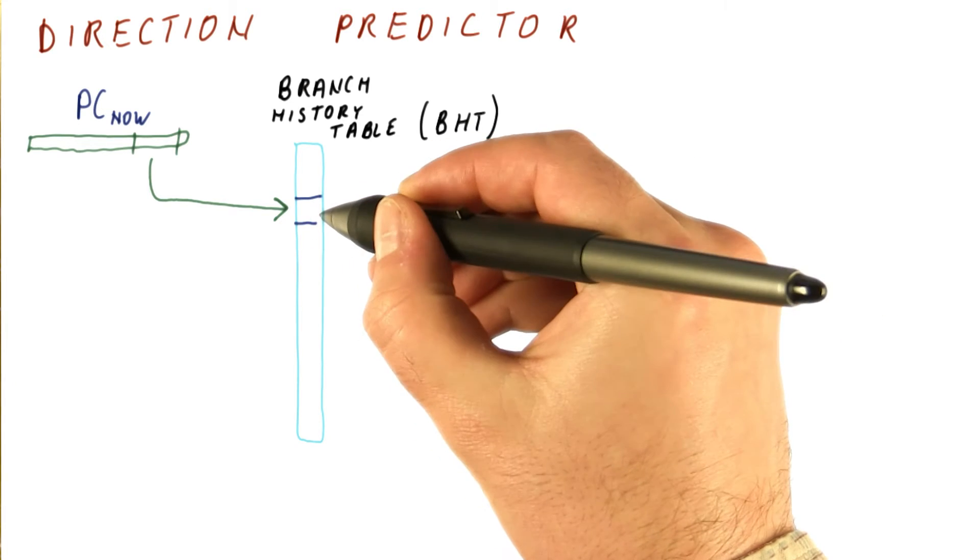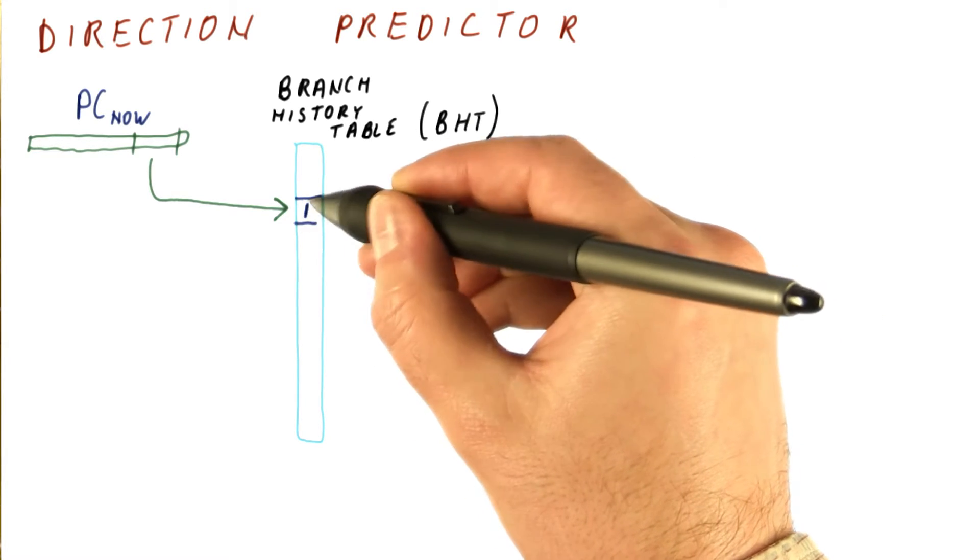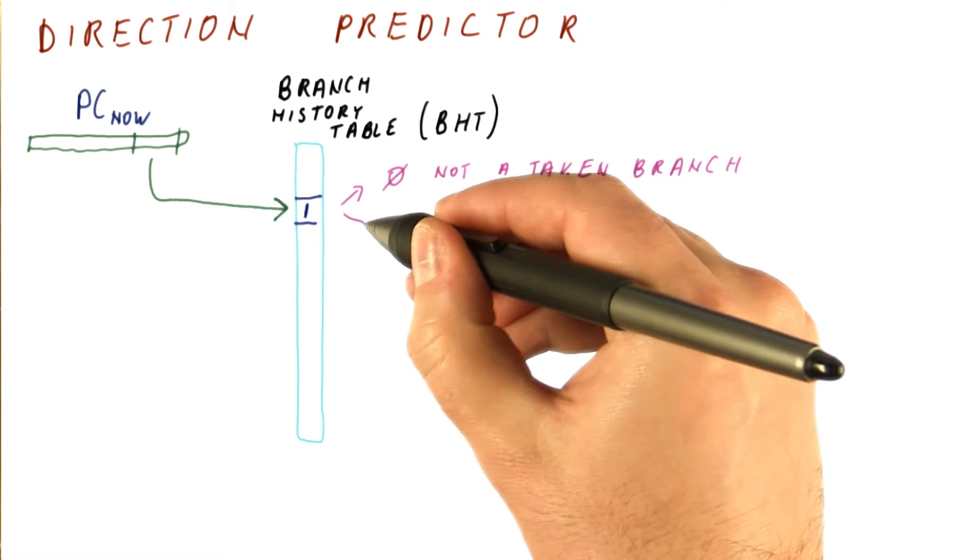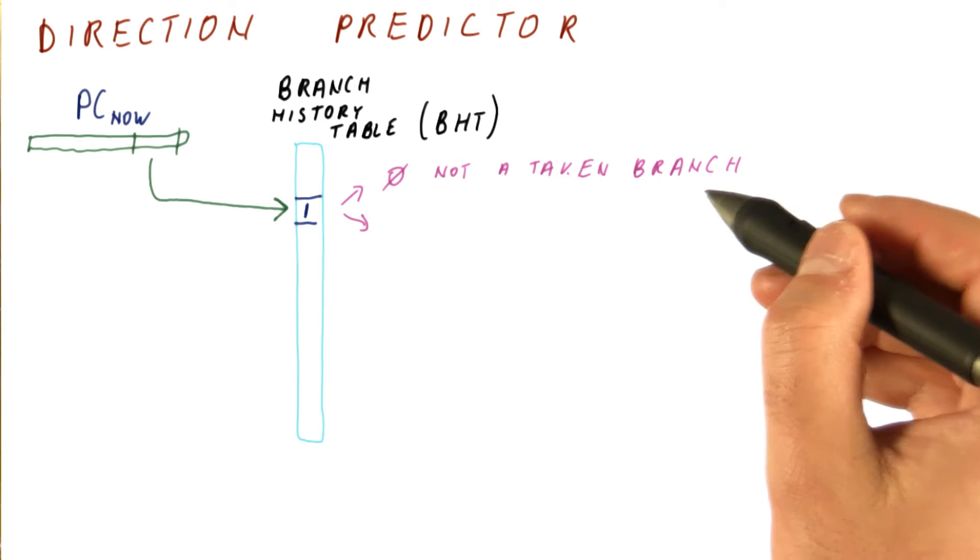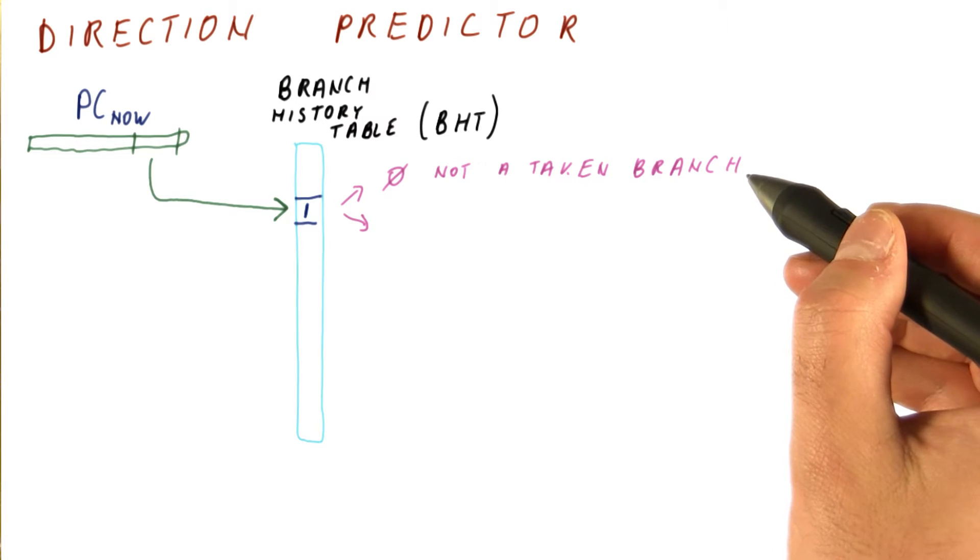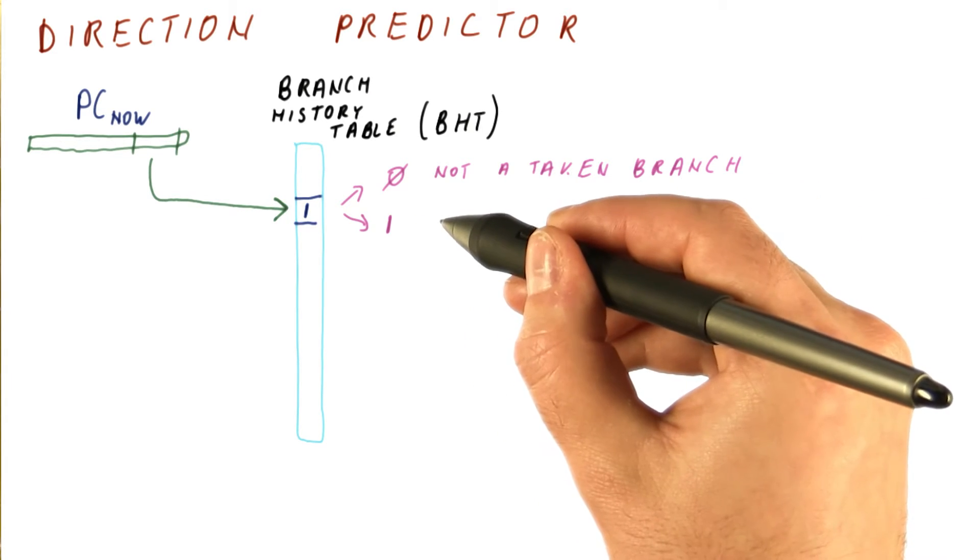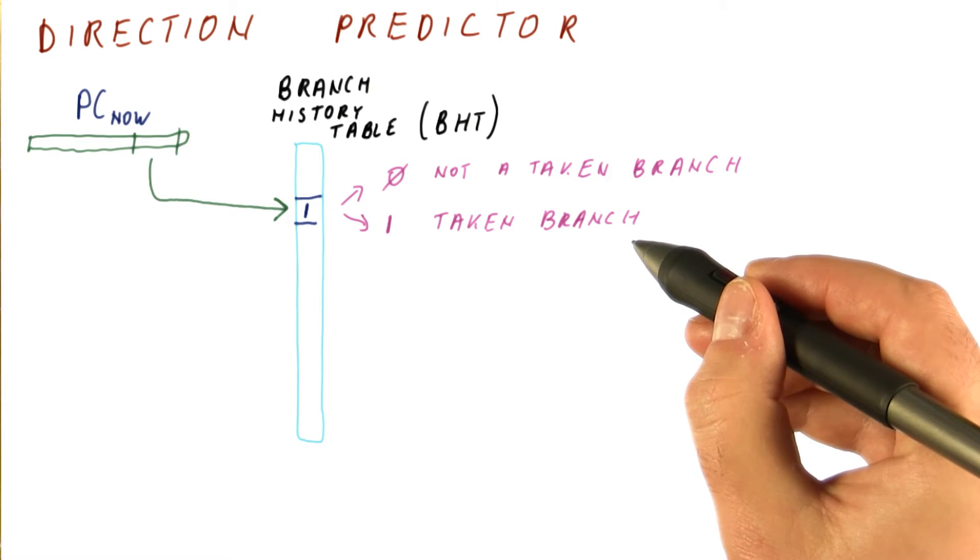The simplest predictor will simply have a one bit here that tells us if this is not a taken branch, meaning it's a non-branch or a not taken branch. Or when it's one, it says that this is a taken branch.